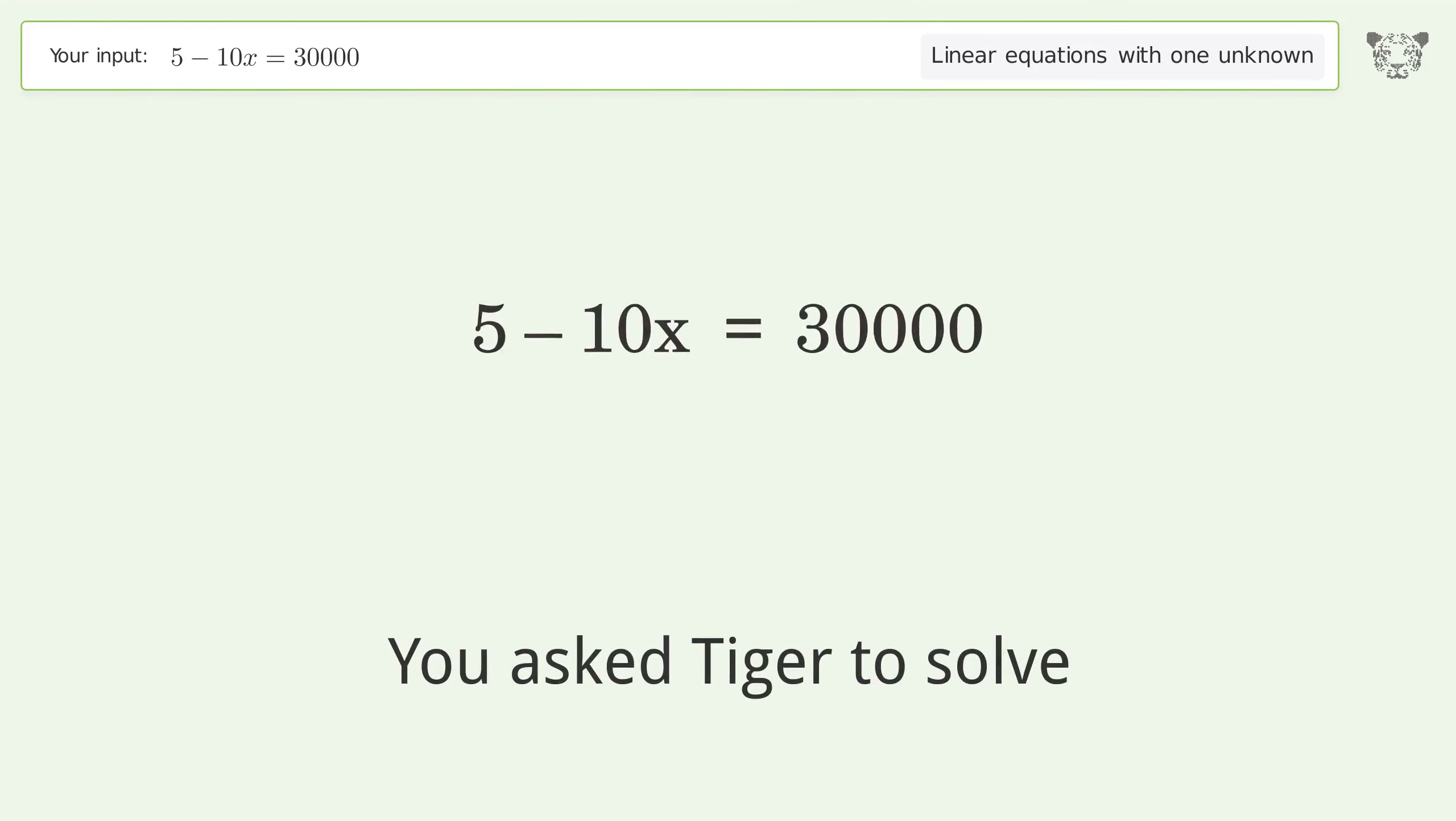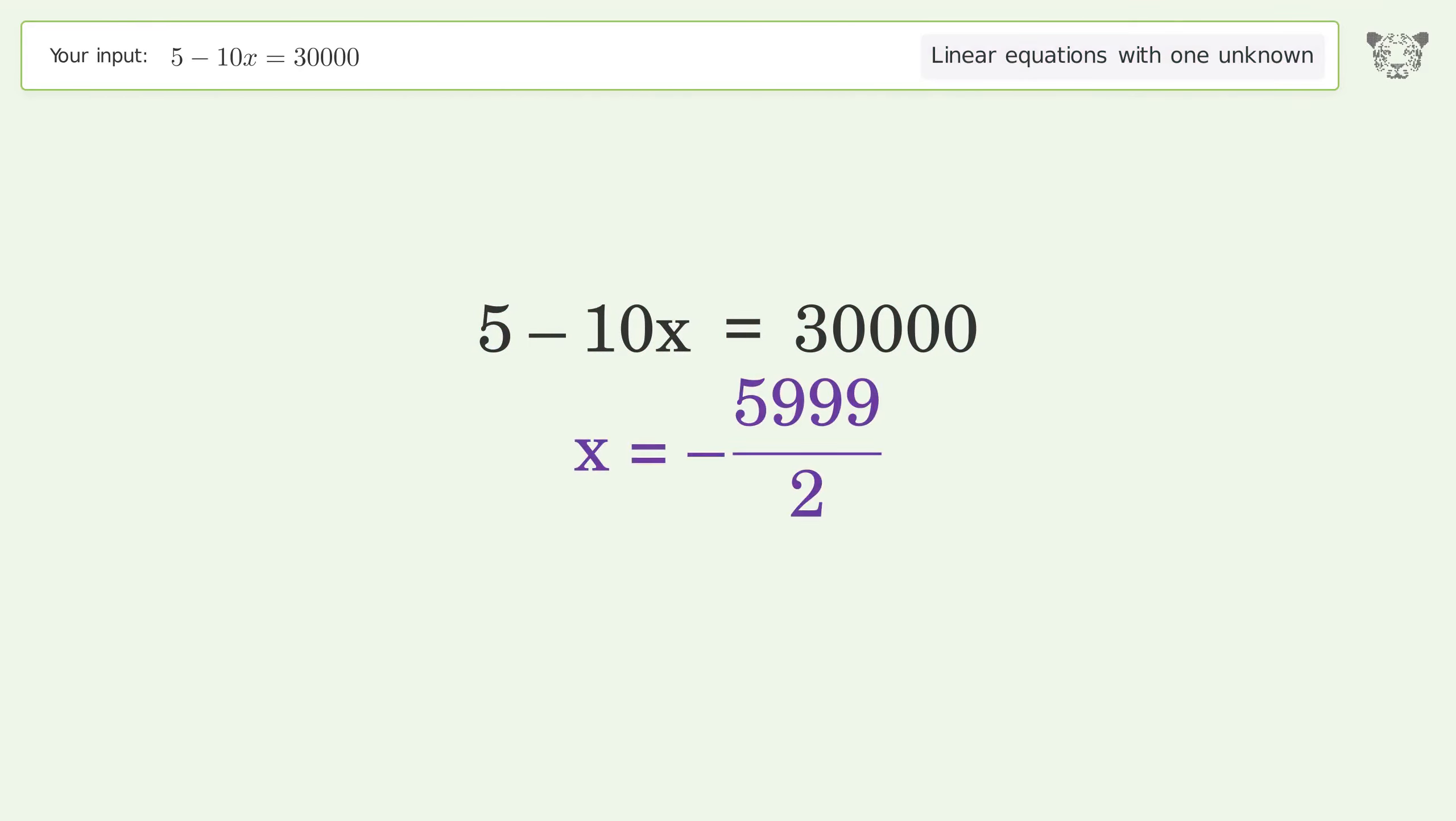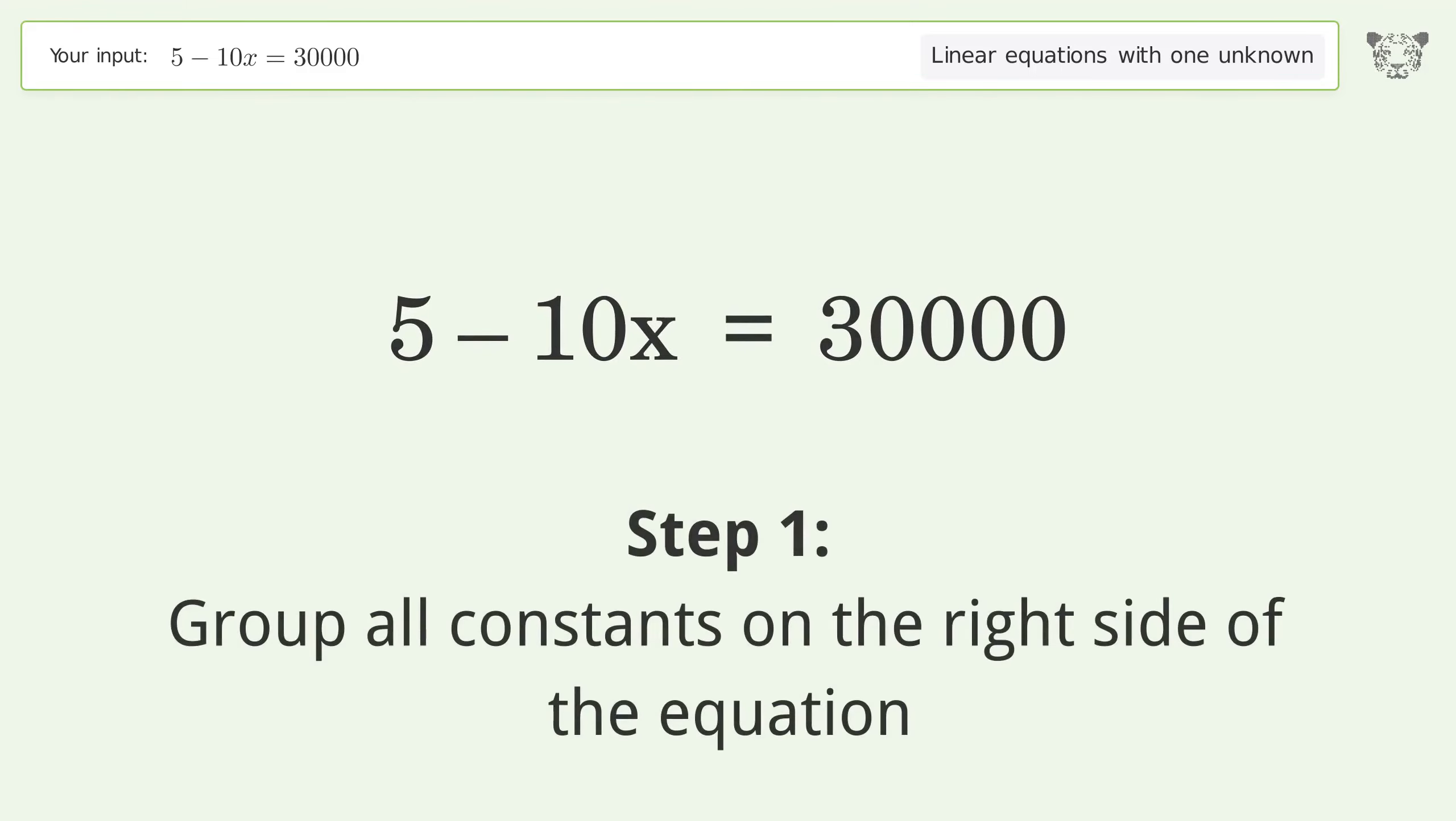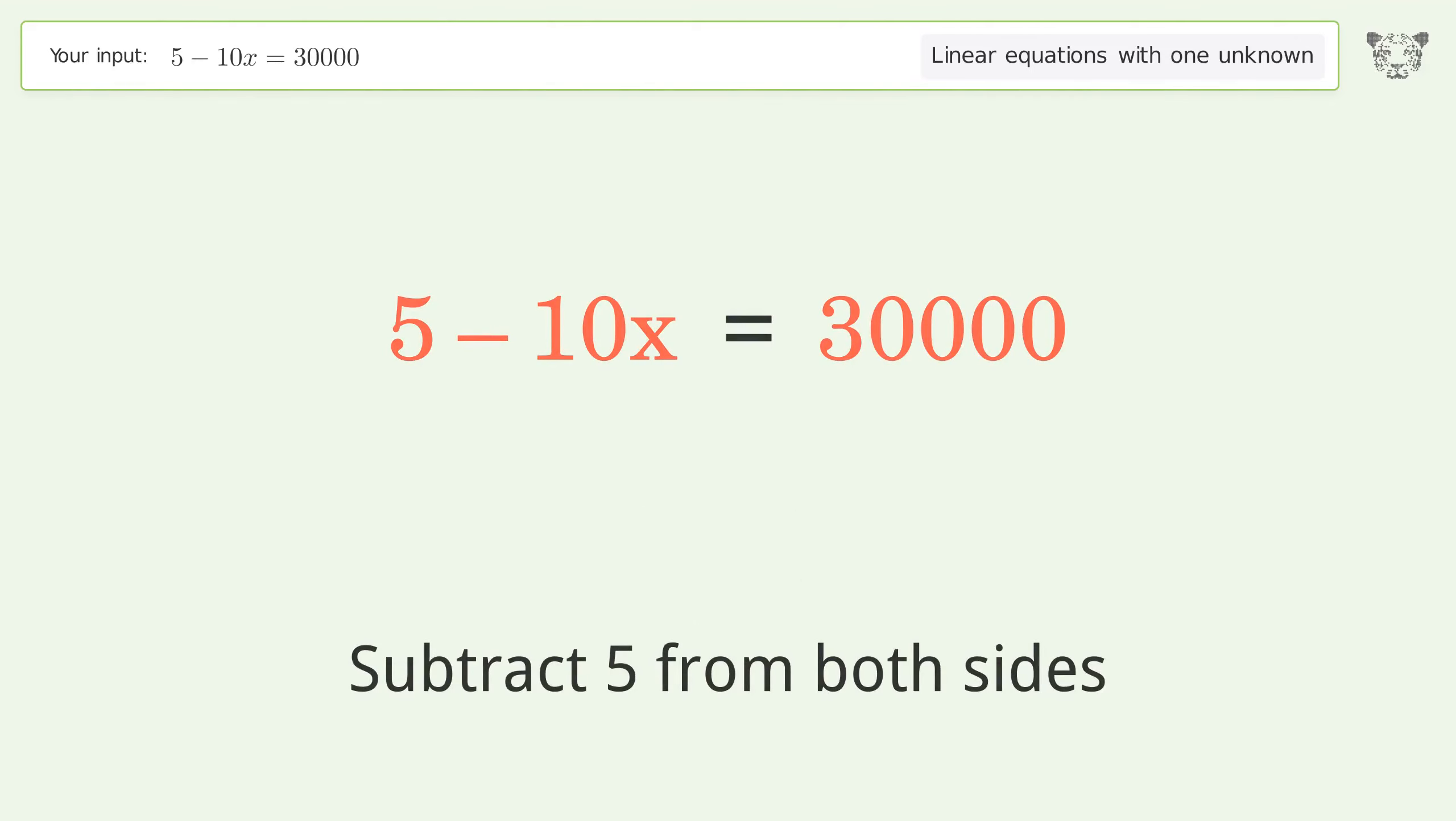You ask Tiger to solve this. This deals with linear equations with one unknown. The final result is x equals negative 5999 over 2. Let's solve it step by step. Group all constants on the right side of the equation. Subtract 5 from both sides.